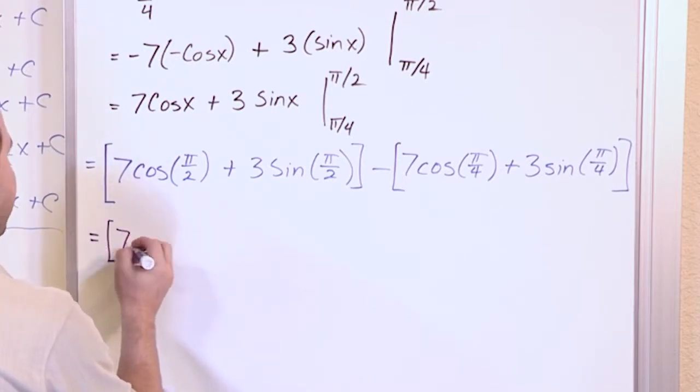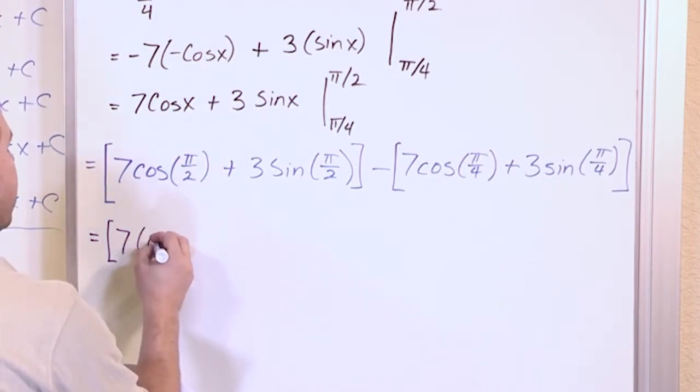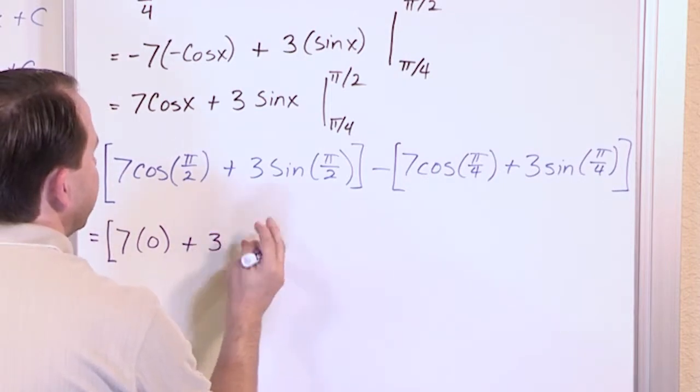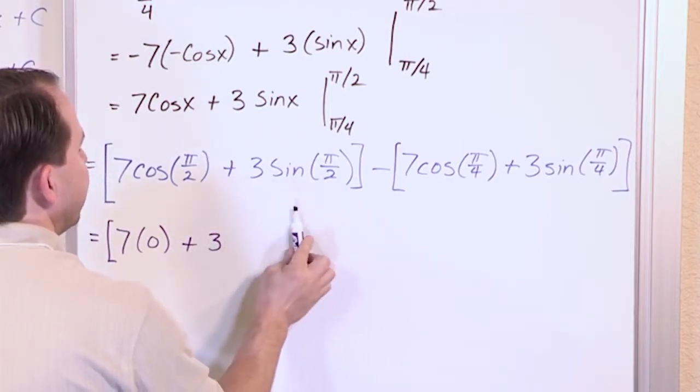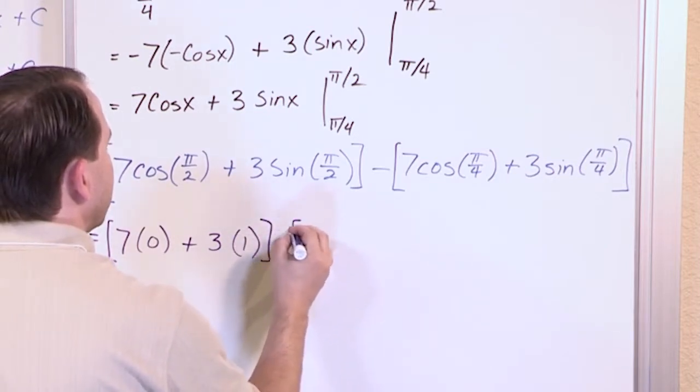So we'll switch colors, and let's see what happens here. So inside the bracket, we have 7. Cosine of pi over 2, if you think back to your unit circle, pi over 2 is up here. So the cosine of that is just 0, plus 3 times, what is the sine of pi over 2? Well, that's up there. Sine of pi over 2 is 1.